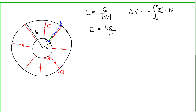Let's indicate the unit vector for the direction of our integration path: R-hat, along the radial line. So the electric field as a vector is equal to KQ over R squared, R-hat. The electric field due to the outer sphere is going to be zero inside that cavity, so we only have to worry about the electric field due to the inner sphere.